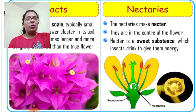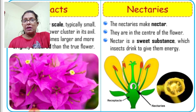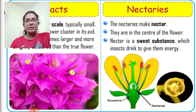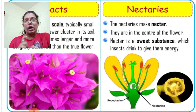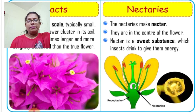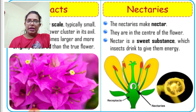Next we will look at two more structures — bracts and nectaries. All the PDFs will be shared on the Telegram channel named Pragya Biology Classes. So if any important notes are not visible behind the screen, you don't need to worry, as all PDFs will be shared there.